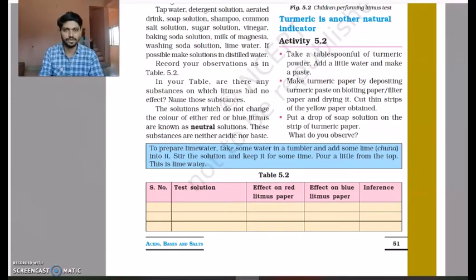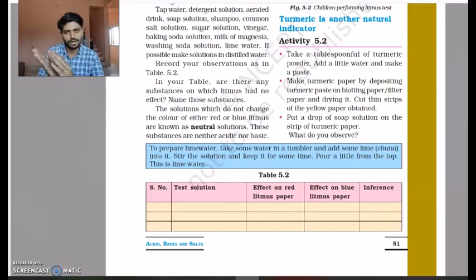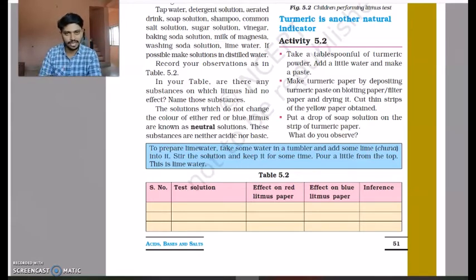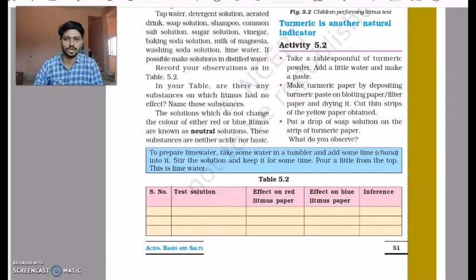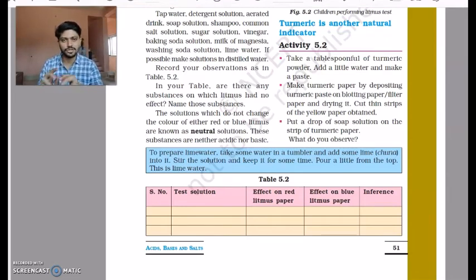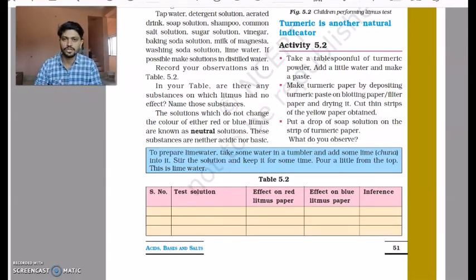But if you add a base — like soap water — to the turmeric solution, the yellowish color changes to red. So turmeric acts as an indicator: it reacts with a base and forms a reddish color. An important point: an indicator does not necessarily change color for every acid and every base. Some indicators change color only with acids or only with bases, but some change color for both.